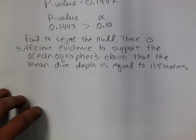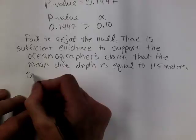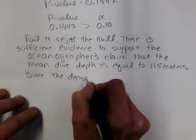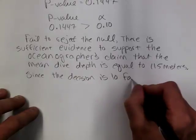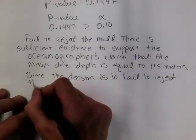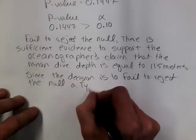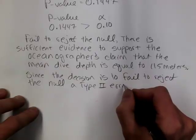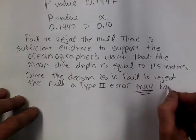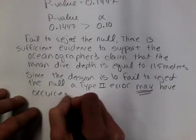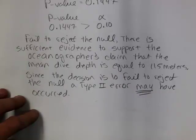So what type of error may have occurred? A type two error. So since the decision is to fail to reject the null, a type two error may have occurred. In other words, we could have failed to reject the null when the null is really false. But again, that's not an intentional error and it doesn't mean that it absolutely did occur. We set alpha so that it's not likely to have occurred.